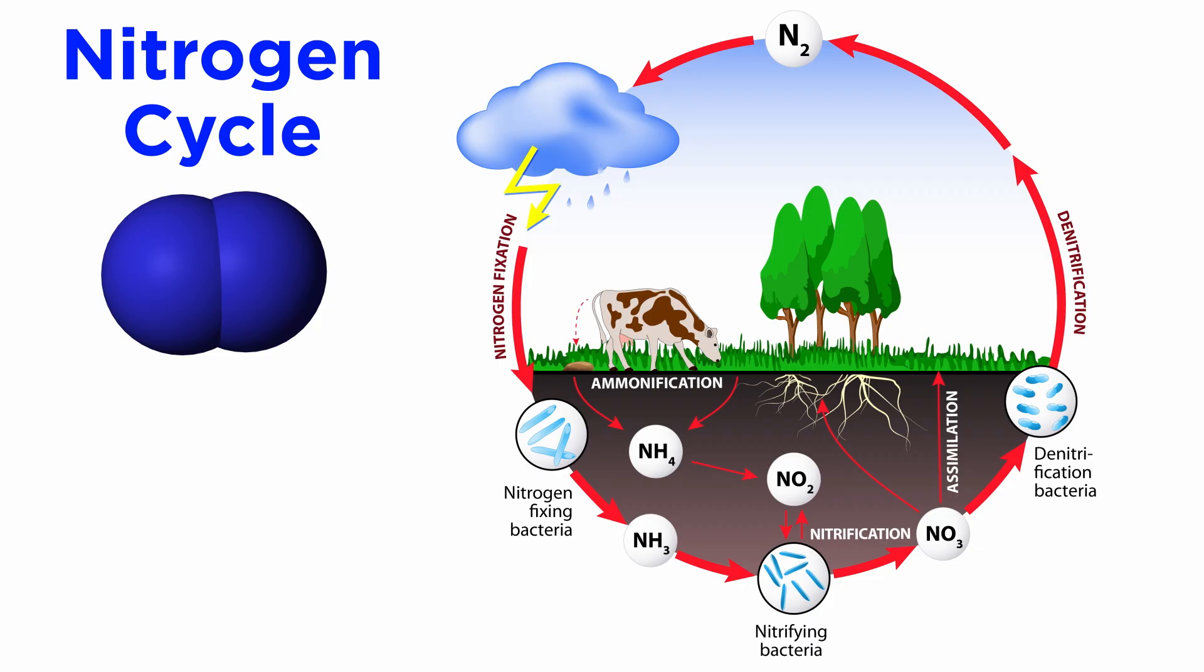The nitrogen cycle involves the uptake of nitrogen from the atmosphere by a process called fixation, carried out by microbes or industrial processes, and then decomposition of biological waste by microbes which can return nitrogen to the soil and eventually the atmosphere.